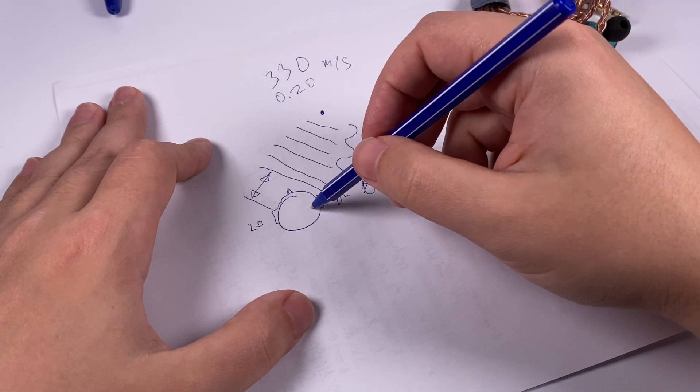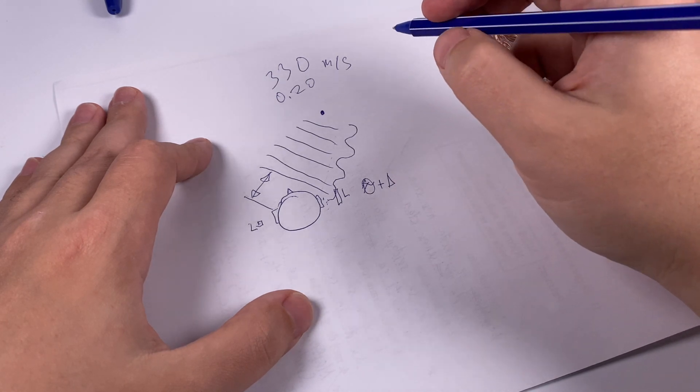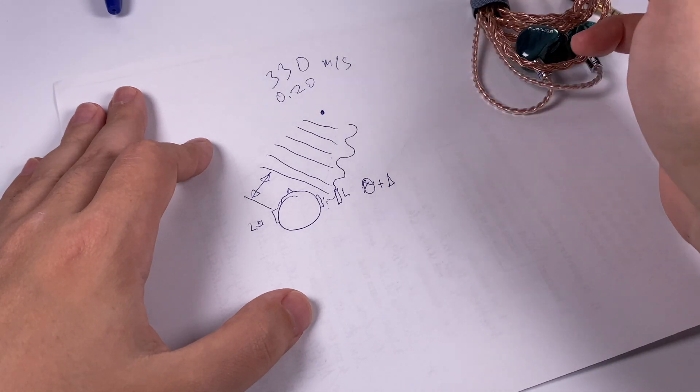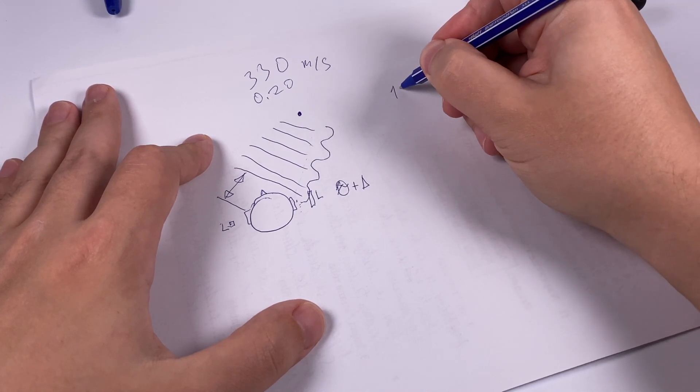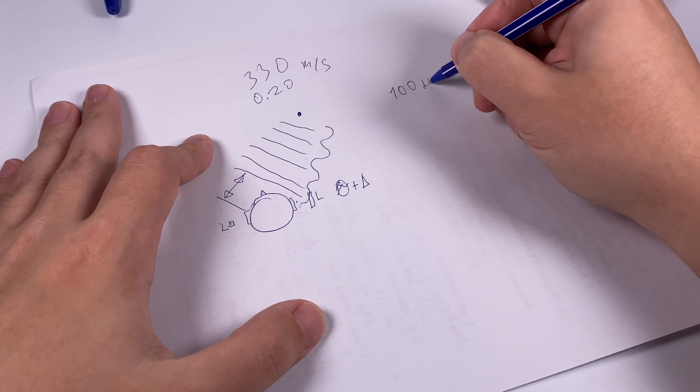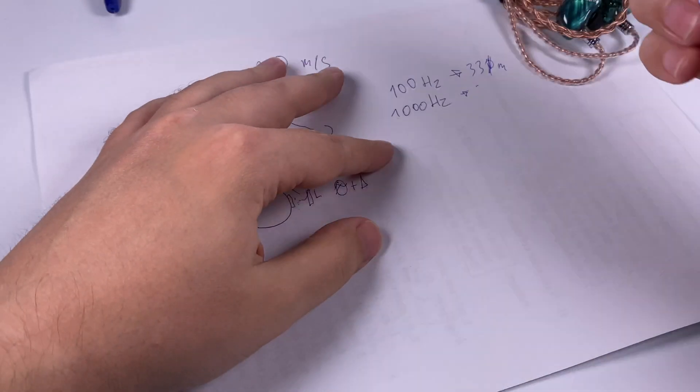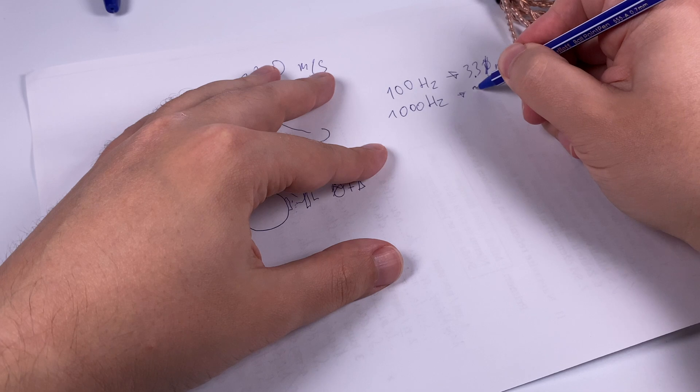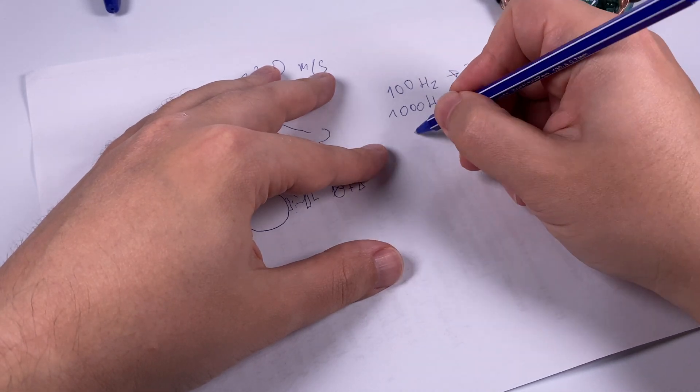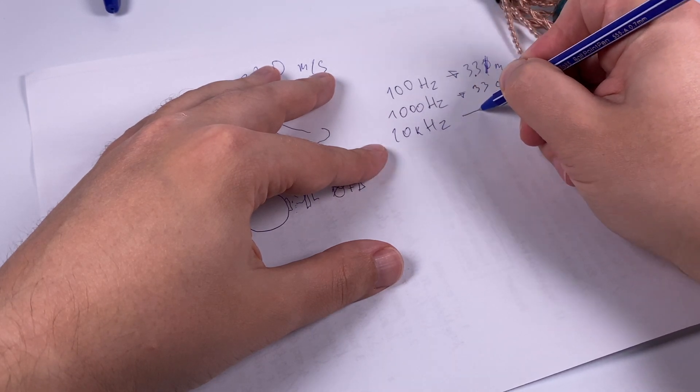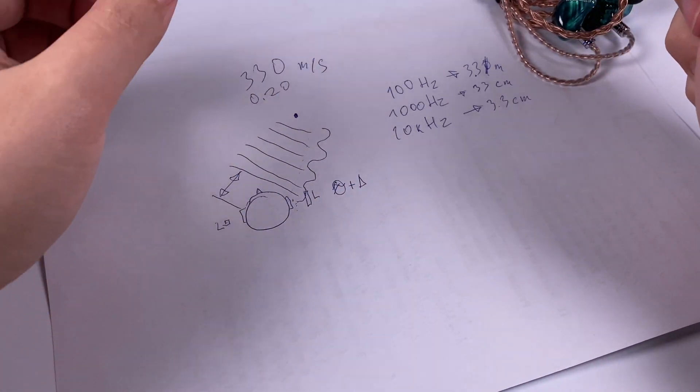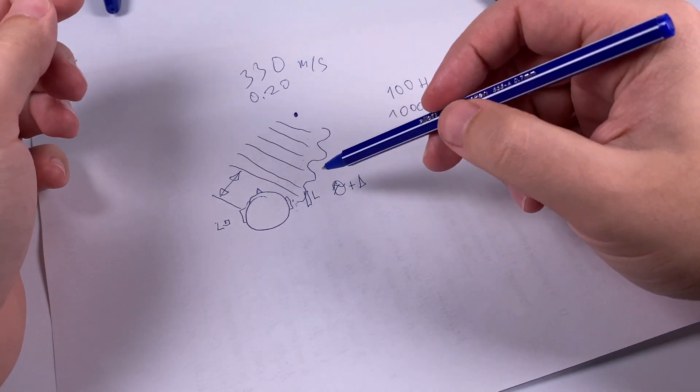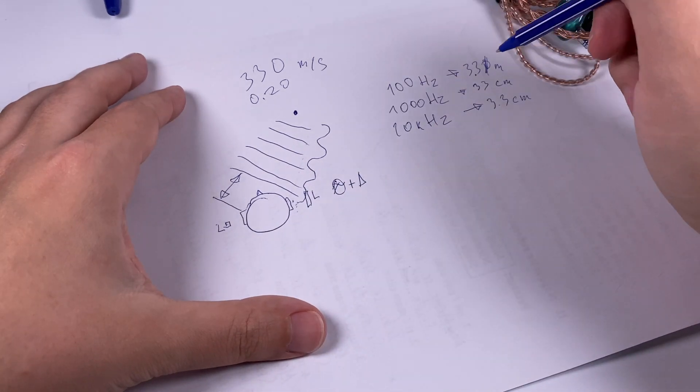There is yet another aspect. Our head shadows sound. It also works better for high frequency sound because there is a correspondence between frequency and length of the wave. For 100 hertz it's 3.3 meters, for one kilohertz it's 33 centimeters, and for 10 kilohertz it's about 3.3 centimeters.